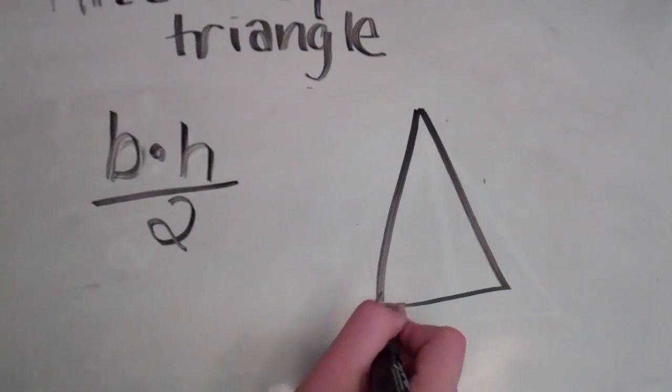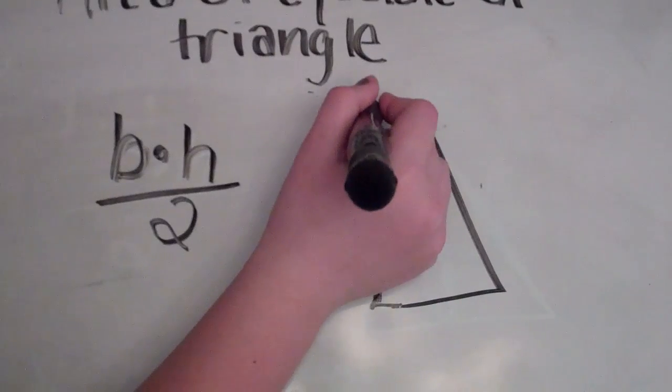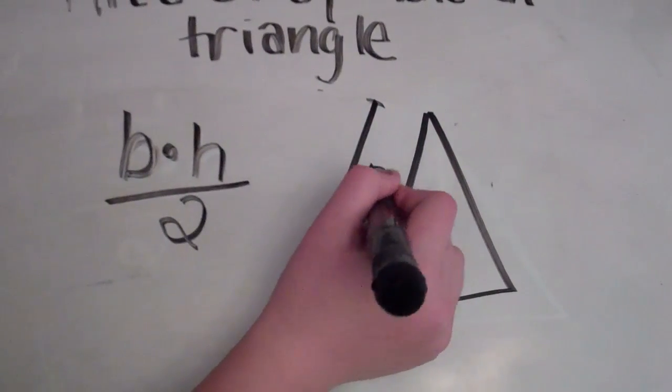In our equilateral triangle, we will have each side being 12 units long.